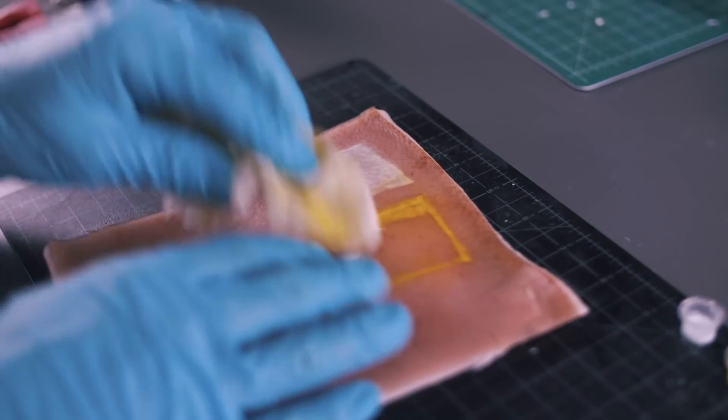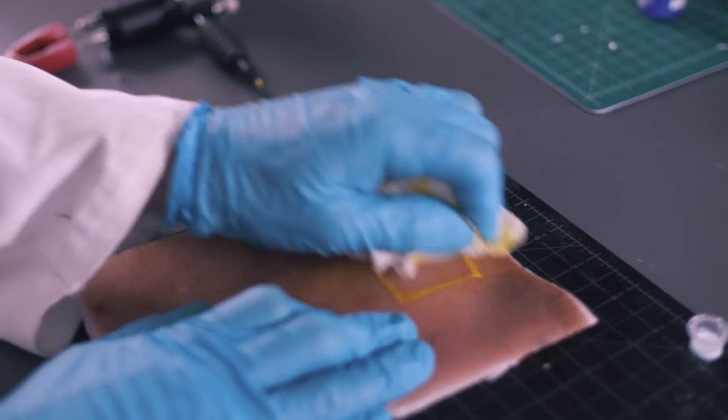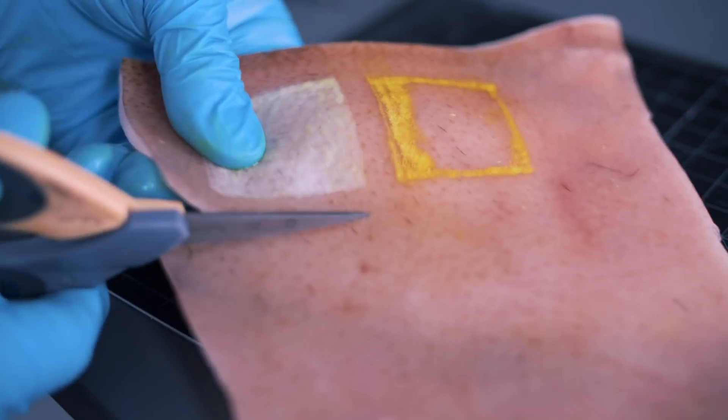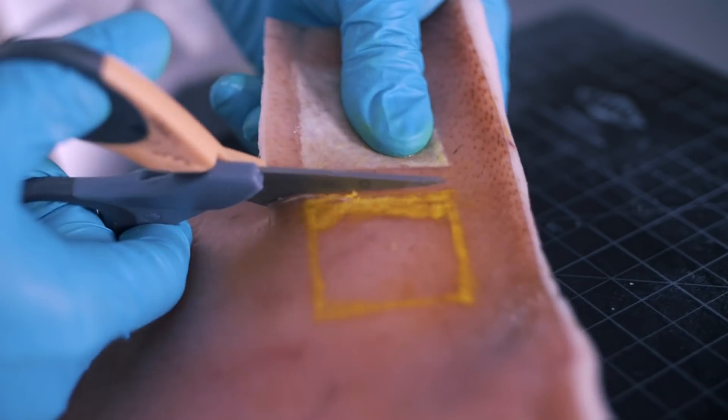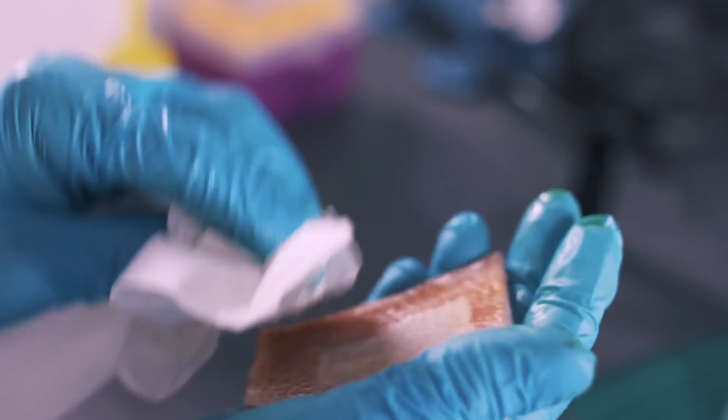So for example, we have tattoo inks that will change color in sunlight. We have tattoo inks that will change color when they're exposed to heat. And we're working on tattoo inks that conduct electricity like a tattooable wire.